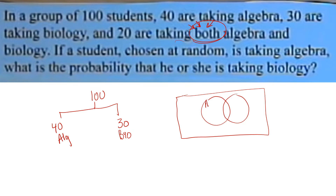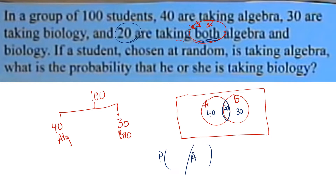Draw a big box with two overlapping circles. In the first circle write algebra students (40), in the second write biology students (30), and in the middle intersection write 20. If a student chosen at random is already taking algebra, what is the probability that he is also taking biology?